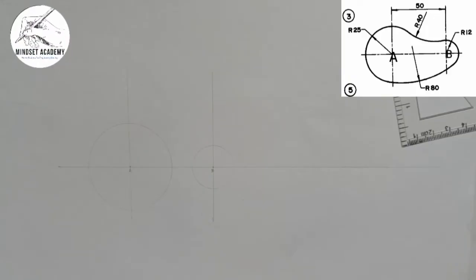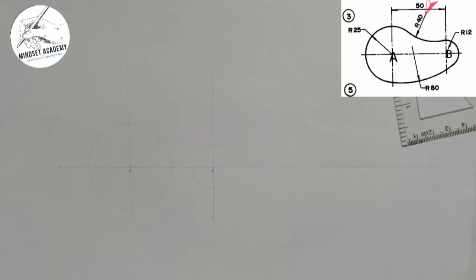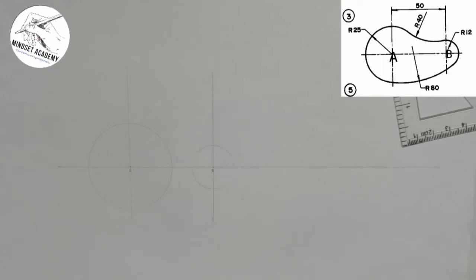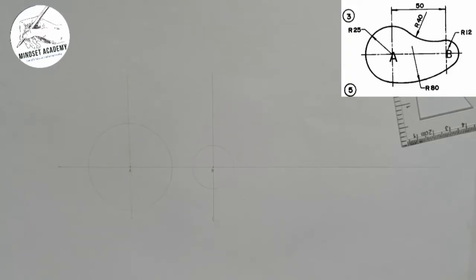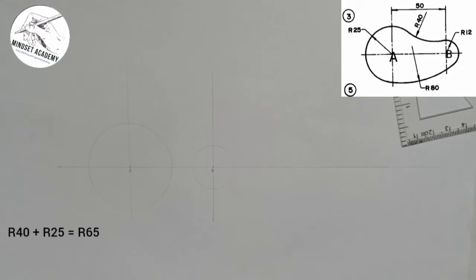Now, looking at the radius of 40, notice that the arc is going inward. Whenever the arc goes in, it means it is external tangency, so you are going to add the radii. Considering radius 25, I add it to radius 40: R40 + R25 = 65. So I need to work with a radius of 65 for that construction.